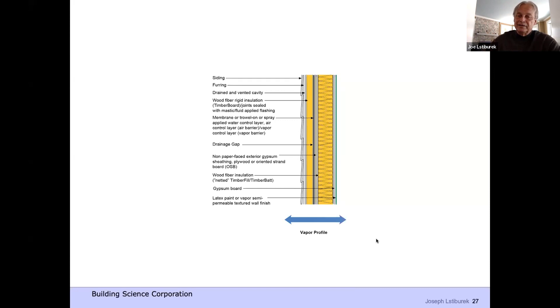Now, only if I had gypsum board and a very vapor open water controller. But if I've got plywood or OSB, I've got a vapor throttle, right? Plywood is 10 to 15 perms, OSB is three to ten perms. So it slows things down. And so all of the folks that think they have a completely vapor flow through assembly really have a vapor throttle. The only time they're completely vapor open is if you have gypsum sheathing or no sheathing.